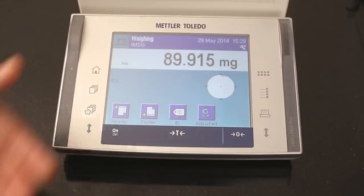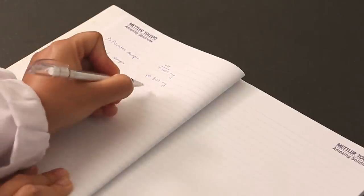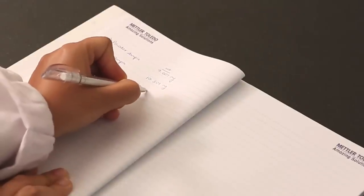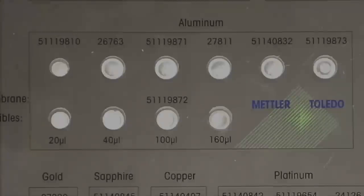Write down the weight in the laboratory journal. Such a correctly crimped crucible should withstand a temperature of up to 120 degrees Celsius when heated at 10 Kelvin per minute.